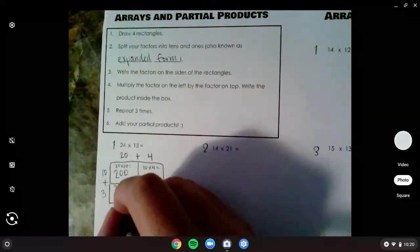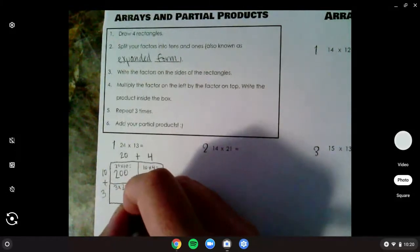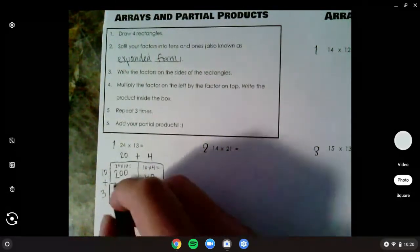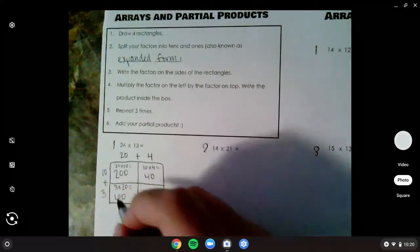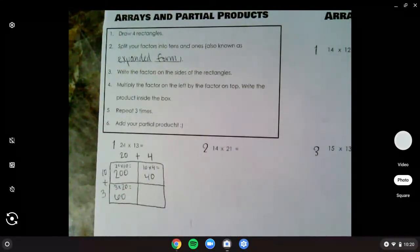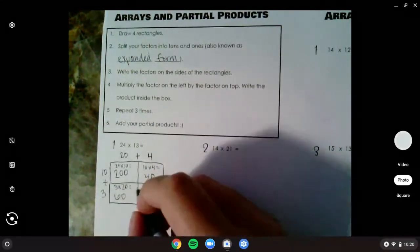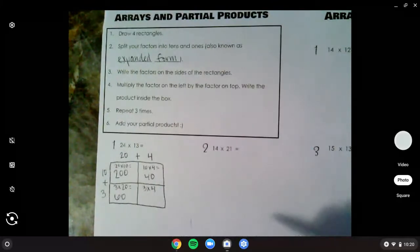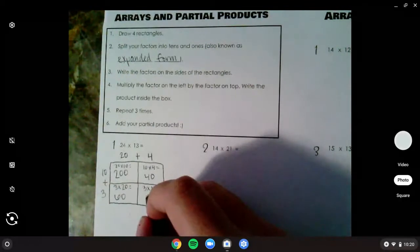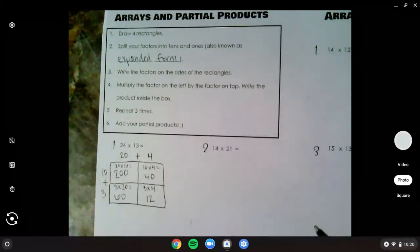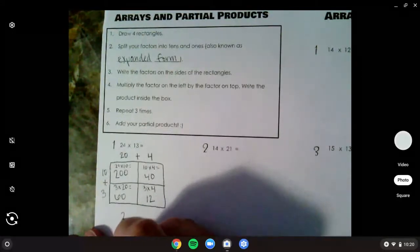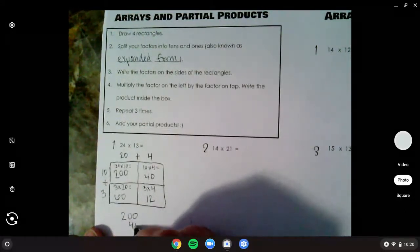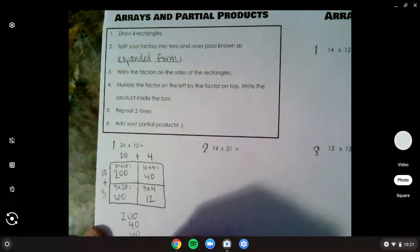Now for this bottom one, I do 3 times what's on top, 20. 3 times 2, I see, I know is 6 and add 1 zero is 60. For this last one, I do my left 3 times what's on top, 4. 3 times 4 or 4 times 3 gets us 12. So I repeated that three times. Now I add the partial products. So I have 200, 40, 60, and 12.